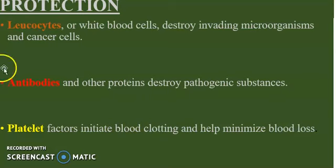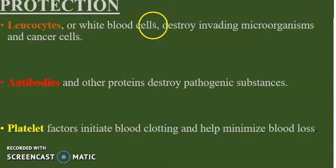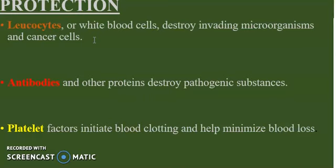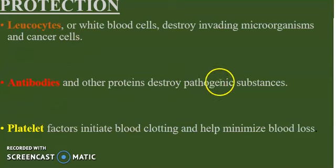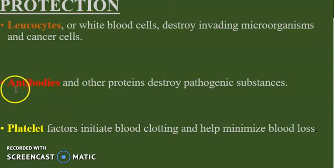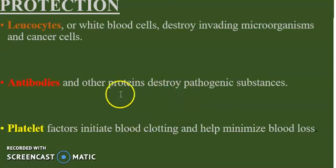Now let's look at the functions of blood in terms of protection. The leukocytes, or the white blood cells, destroy invading microorganisms and cancer cells. The leukocytes protect our body system — they act as soldiers of the body, defending it against any harmful pathogen or foreign material. They also produce antibodies and other proteins that destroy pathogenic substances. Antibodies are chemical substances produced by the body that destroy harmful agents.